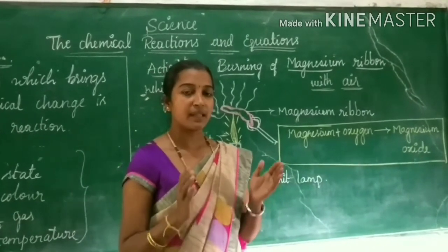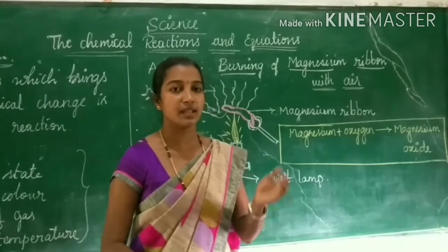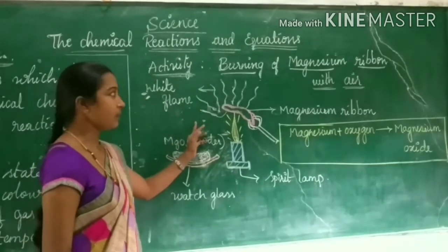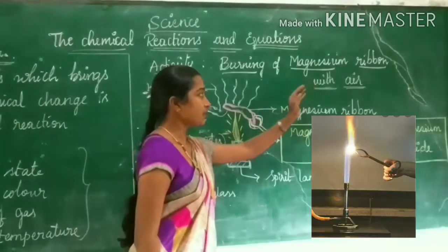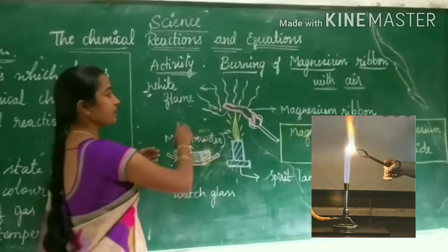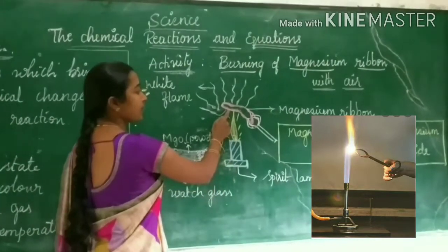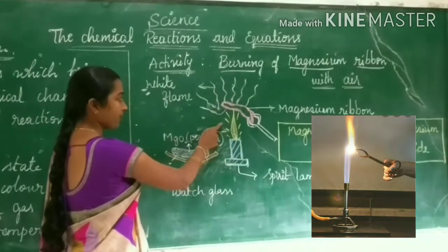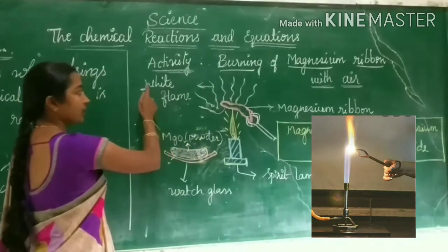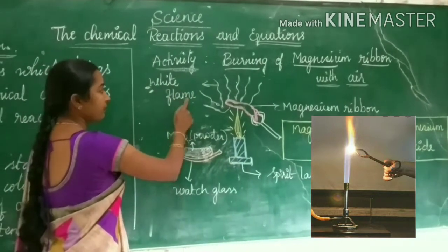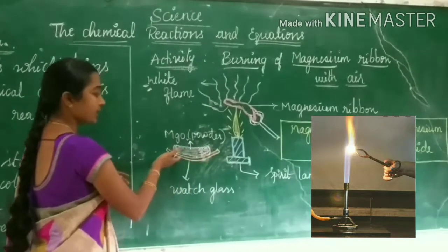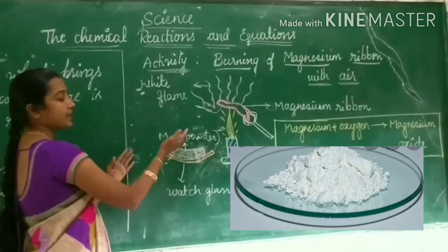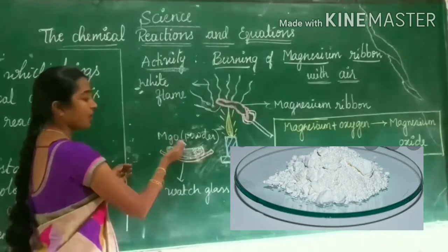Now let's come to an activity. The magnesium ribbon must be cleaned with sandpaper before doing this activity. The magnesium ribbon is then burned with the help of a spirit lamp. It starts burning by using the oxygen present in the atmosphere. When it starts burning, it produces a white dazzling flame, and after some time it gives a residue. The residue is collected in a watch glass.